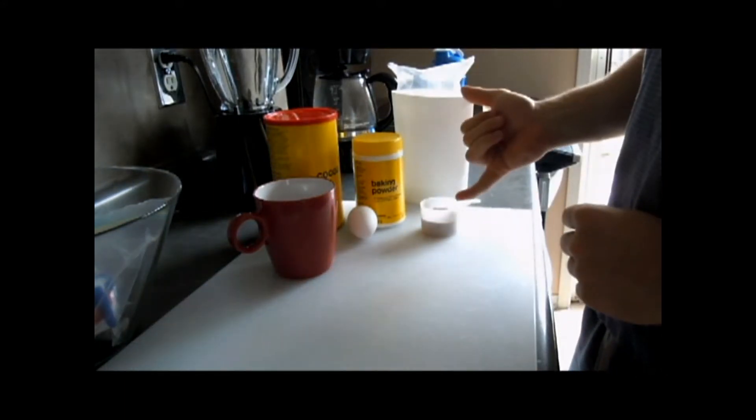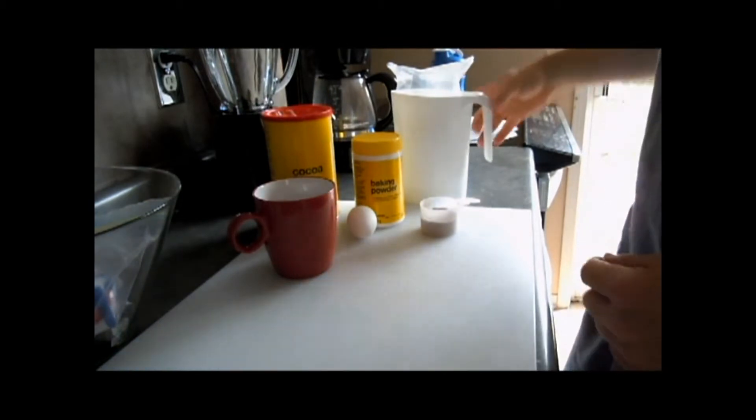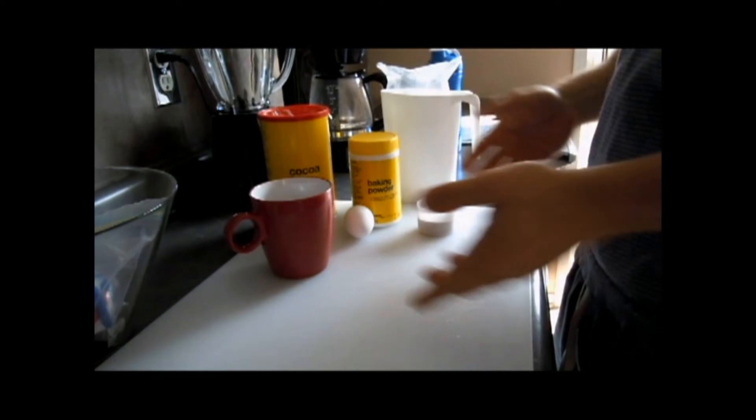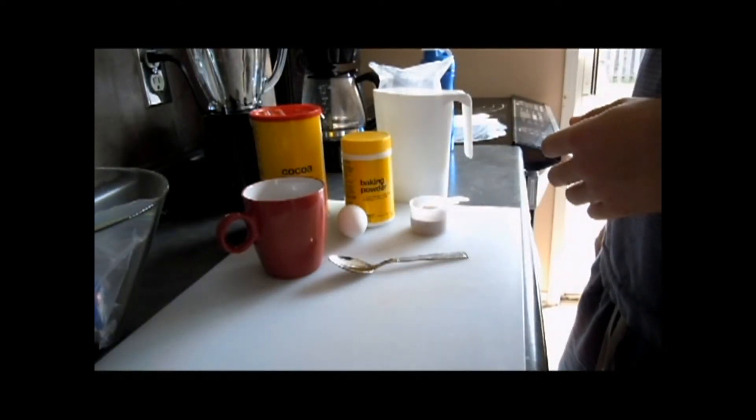So, what do we need? We've got our protein powder, baking powder, one egg, some cocoa, and some milk. It's very simple, one step. You literally put it all into here—a spoon and these ingredients.